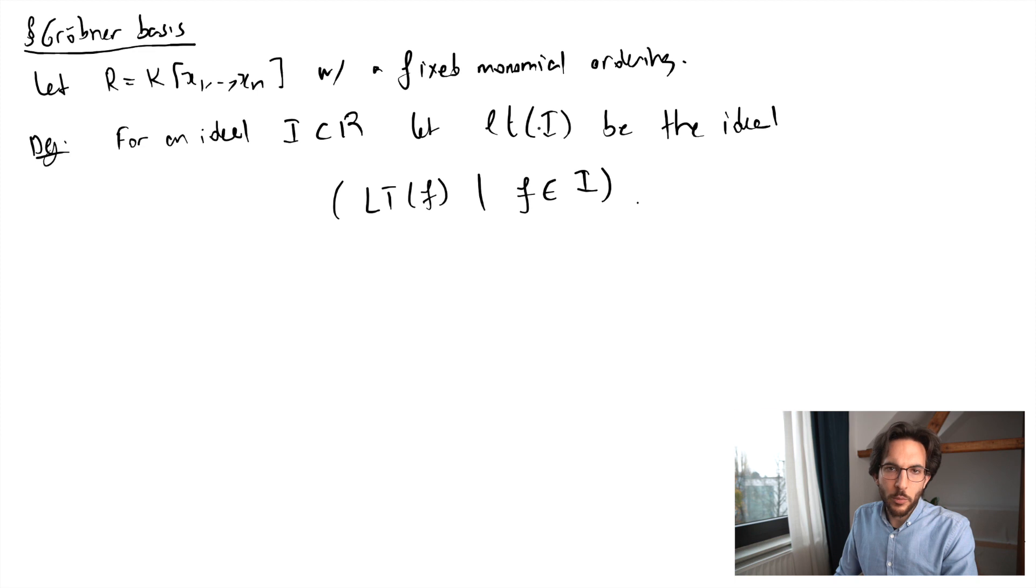This is slightly different than in the book Ideals, Varieties and Algorithms where they use capital LT to denote the set of all leading terms. One thing to observe here is that since we're working over a field, all of the leading coefficients are invertible, which means instead of the leading term of f, I could have written the leading monomial of f. That would be fine. It would have given me the same ideal.